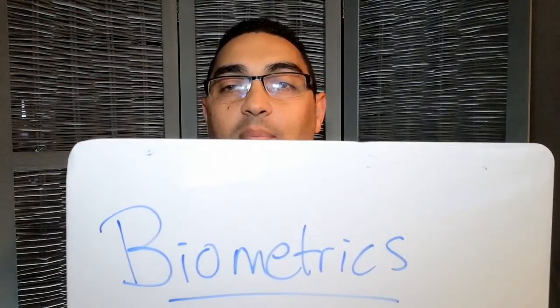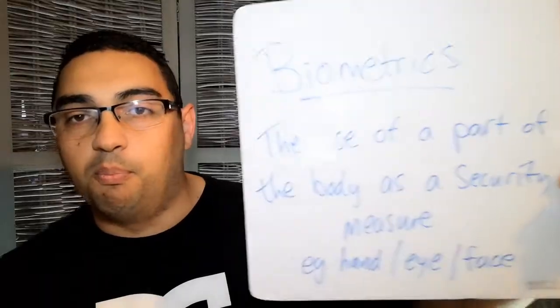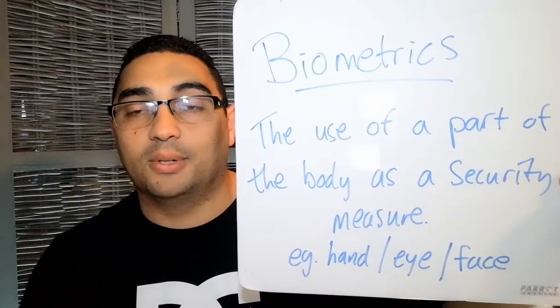The next term is biometrics — you've seen this in so many movies. Biometrics is the use of a body part as a security measure. In spy and superhero movies, a character comes up to a vault, places his hand on a screen and it scans it, or they scan the iris or the face, and it allows him in. Instead of having a key or combination, we're using a body part as the security measure.